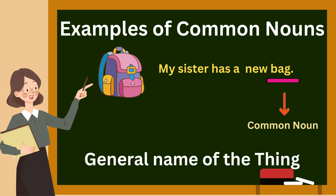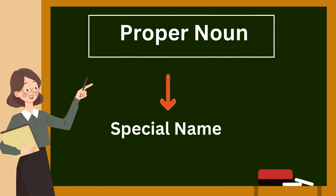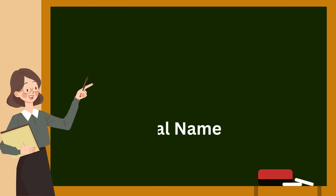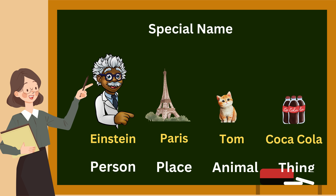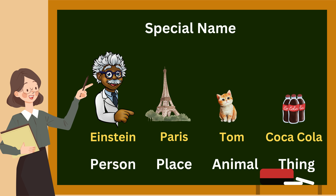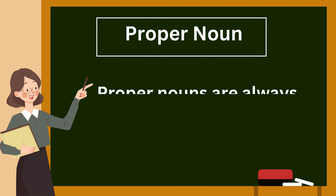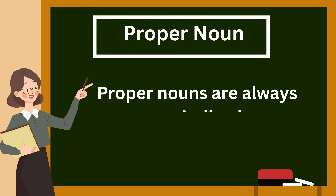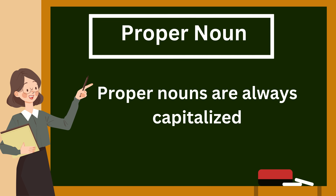Next, we are going to see proper noun. A proper noun is a specific name for a particular person, place, animal, or thing. Proper nouns are always capitalized.